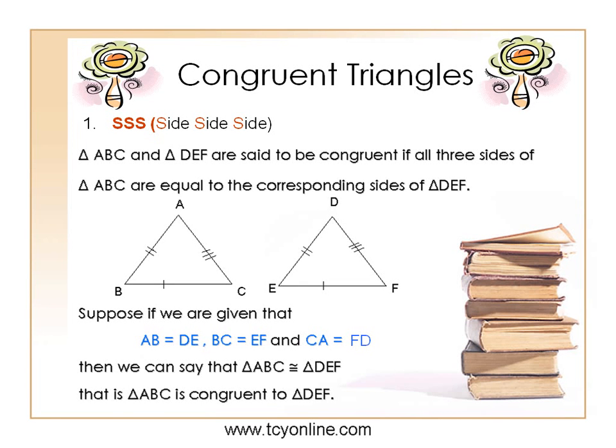Suppose we are given that side AB is equal to side DE, side BC is equal to side EF, and side CA is equal to side FD. Then by SSS congruency, we can say that triangle ABC is congruent to triangle DEF.